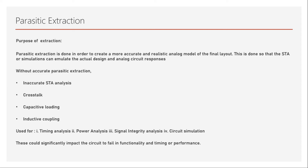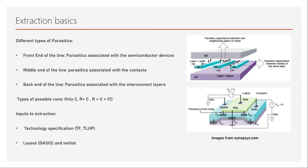Parasitic extraction is absolutely needed in the VLSI physical design flow. There are three types of parasitics, which the tools themselves categorize and extract differently because they have different characteristics and models.